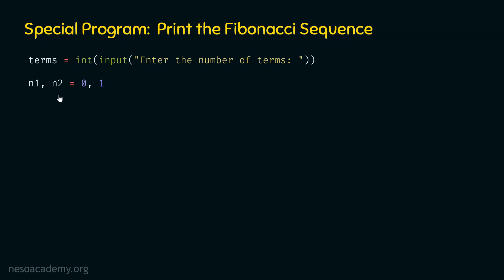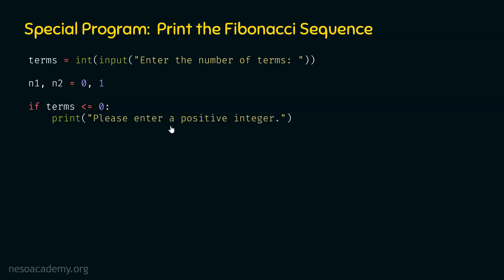We need to check: if the user has entered a negative value or zero, we need to ask the user to enter a positive integer. So we check: if terms is less than or equal to zero, then we print 'Please enter a positive integer.' It is important that the user enters a positive integer in order to obtain the Fibonacci sequence.